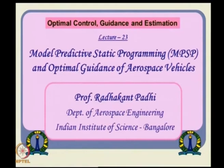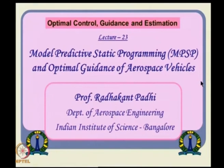However, the HJV equation is a nonlinear partial differential equation, and that leads to the curse of dimensionality. The first approach leads to the curse of complexity; the second approach leads to the curse of dimensionality. There are evolving techniques which try to avoid those problems in a limited sense, and one of them happens to be approximate dynamic programming, which we have already seen.